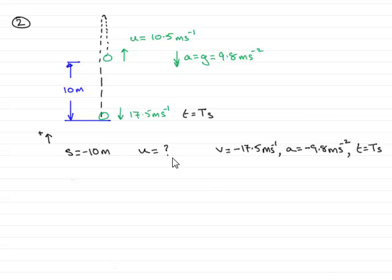Now that we know that u is 10.5 meters per second, I can write it in here as well, 10.5 meters per second. And we've now got to move on to part b, and part b asks us to find the time it takes for the particle to go up there and back down.